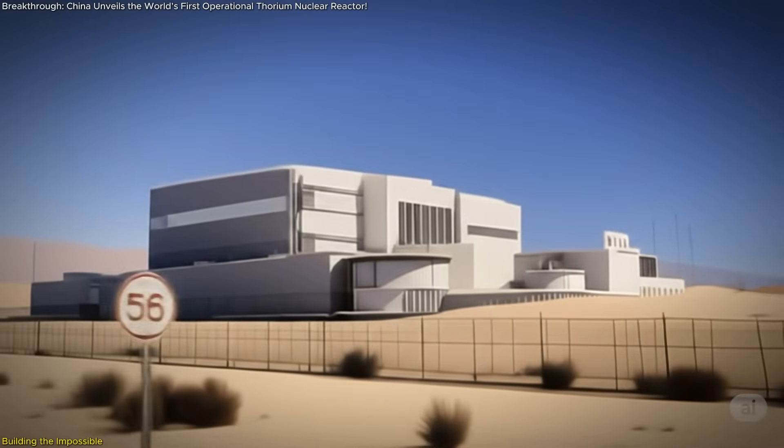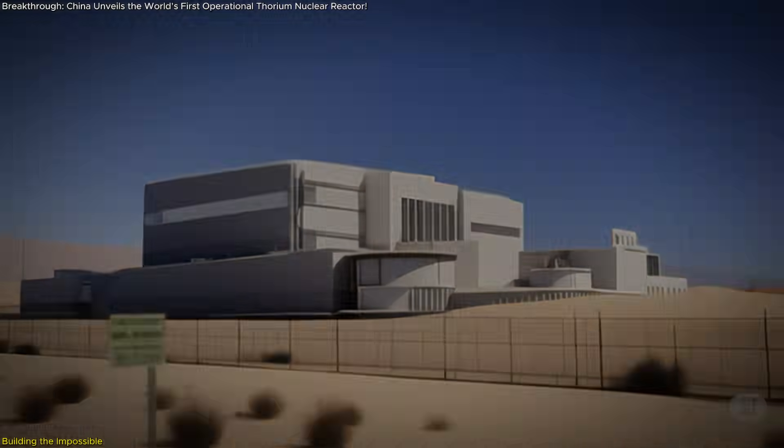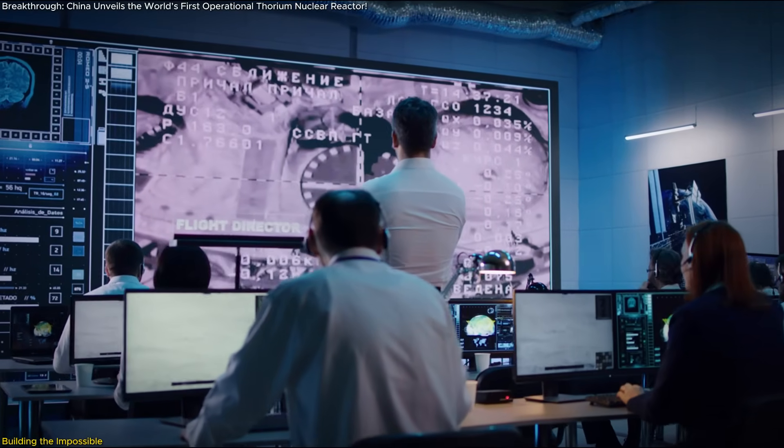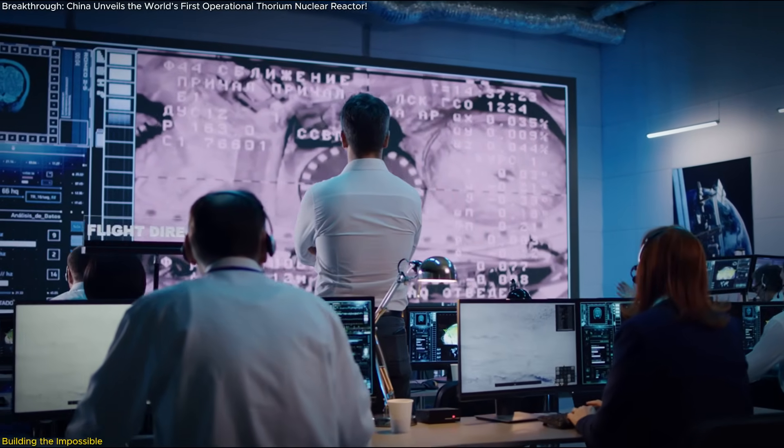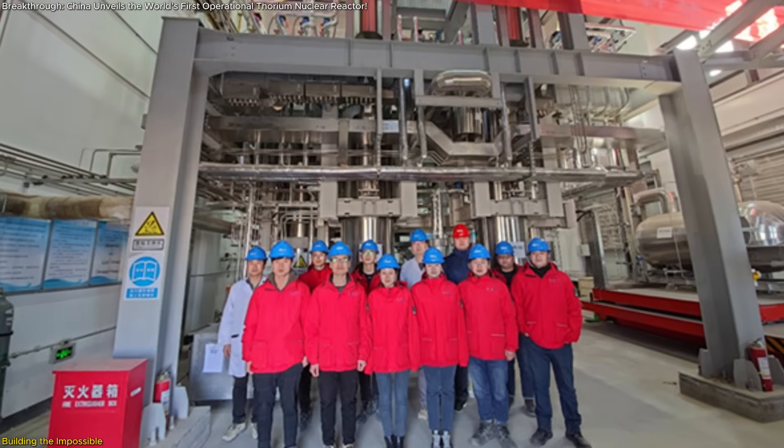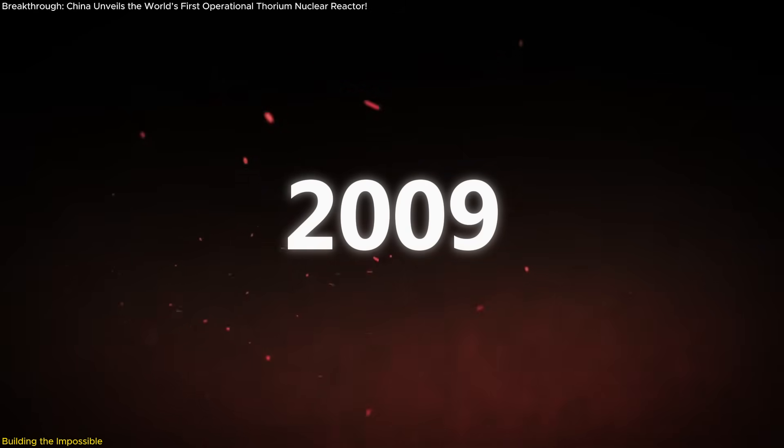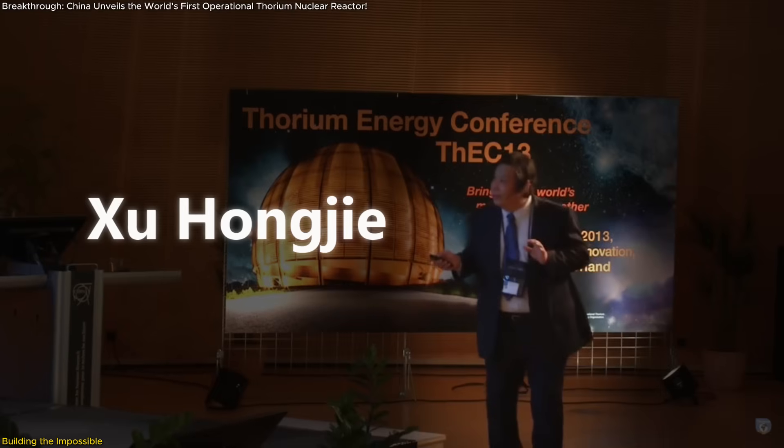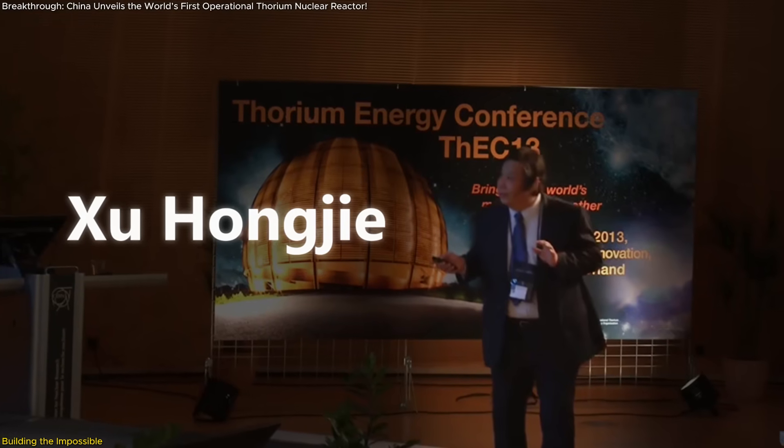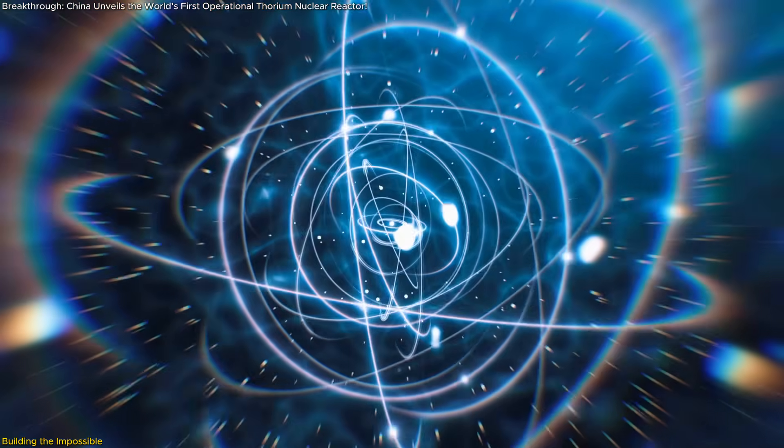Creating the first operational thorium molten salt reactor wasn't a matter of simply following a blueprint. It was about pushing the limits of materials science, thermodynamics, and nuclear engineering all at once. From the very beginning, the Chinese team took on one of the most technically ambitious projects in energy development. The roots of this project stretch back to 2009, when the Chinese Academy of Sciences assigned physicist Su Hongjie a clear but daunting mission: bring thorium reactor technology out of theory and into the real world.